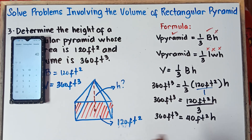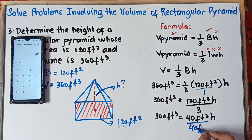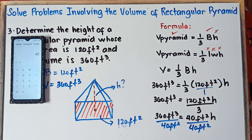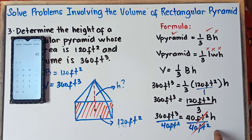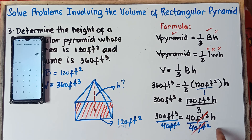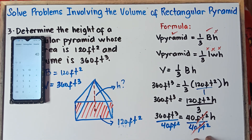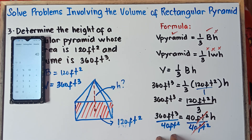Last step: divide both sides by 40 square feet so we can cancel that out and the remaining equation on the right side of the equal sign will be only h. Once you divide 40 square feet on the right, you also do that on the left side to keep the equation balanced.